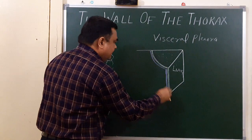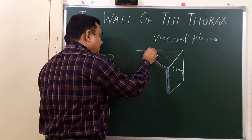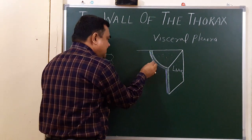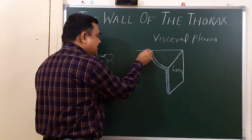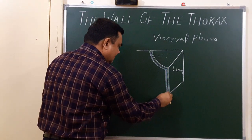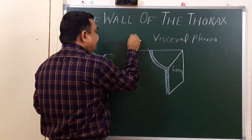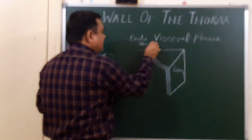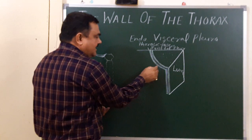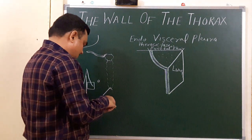The parietal pleura is adherent with the endothoracic fascia. This fascia is the endothoracic fascia. Deep to this there is the parietal pleura, and there is the visceral pleura. There is lung, and in between the parietal pleura and visceral pleura there is a space — this is the normal pleural space, or pleural cavity.